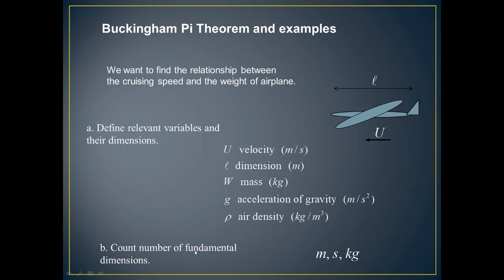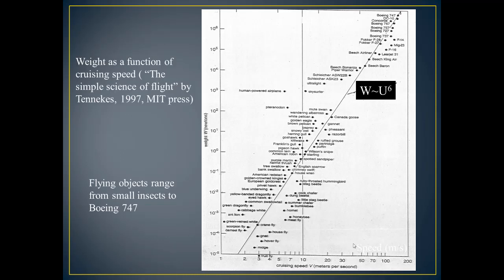Now we will try to count the number of fundamental dimensions. What are the fundamental dimensions? We know length, time, and mass — M, L, and T. So now they have found this relation between cruising speed V and weight of the plane, and it is approximately equal to U to the power 6. This is described for all flying objects, starting from small flies to big Boeing planes.